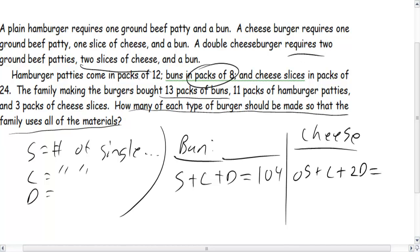Yeah, a double burger requires two ground beef patties and two slices of cheese. There we go, and one bun. So there's our equation. So now the question is, how much cheese do we need? Let me clean off some of the stuff.